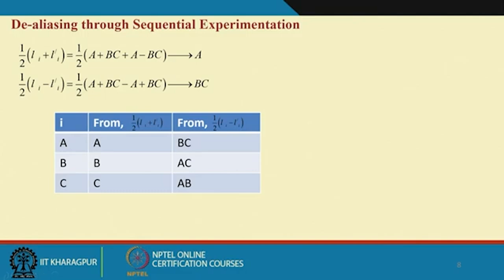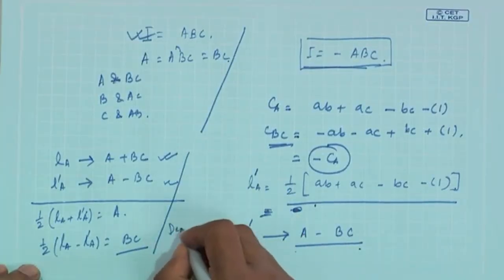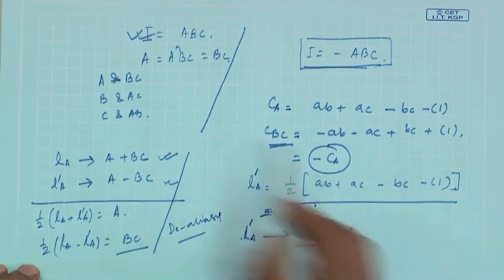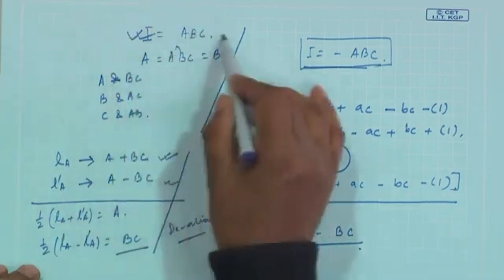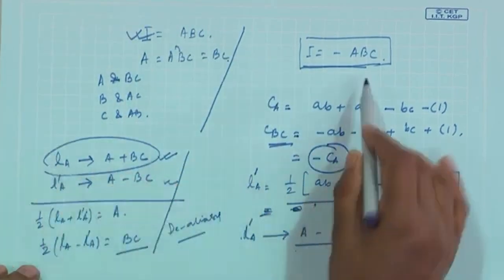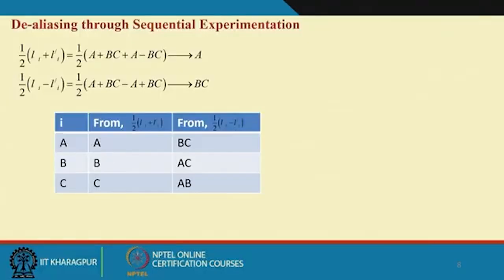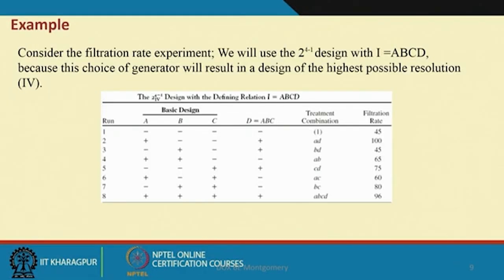This concept is known as dealiasing. When you use one half and get the aliased estimates, that is the aliasing. In order to dealias, you require the other fraction also. When it is a half fraction you need the complementary half; when it is a one-fourth fraction you require more. Let us now see one example after all this fractional discussion.